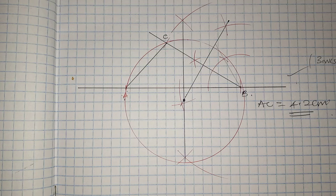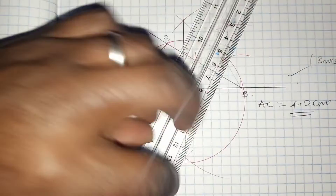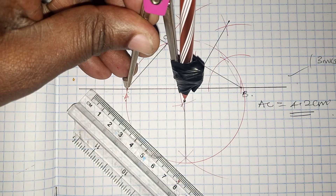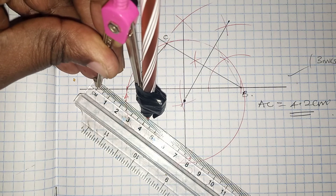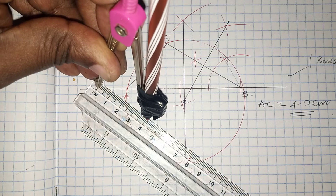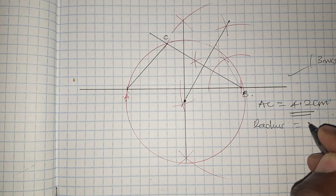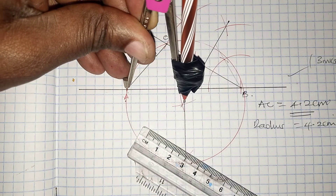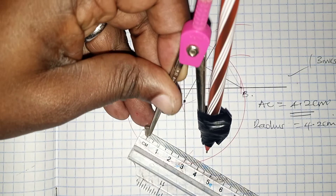Part D asks us to measure the radius of the circle. We take the compass length from the center to the circumference and place it on the ruler. The radius of the circle is 4.2 centimeters. You may ask how the radius equals AC — it happens in this construction, giving us the same value.